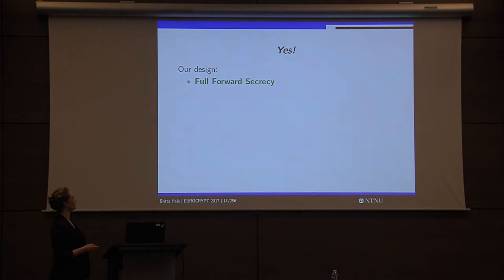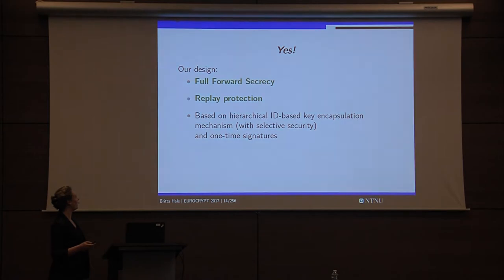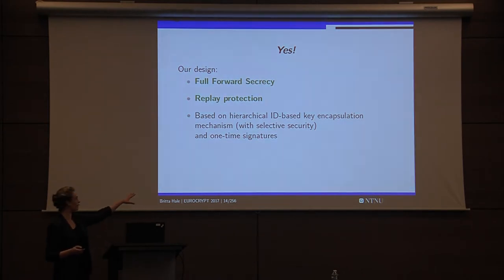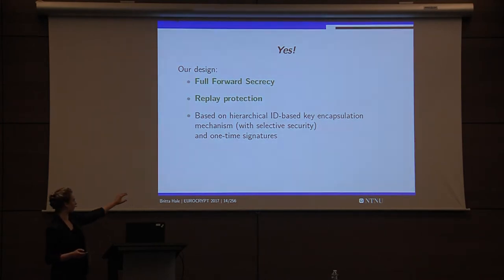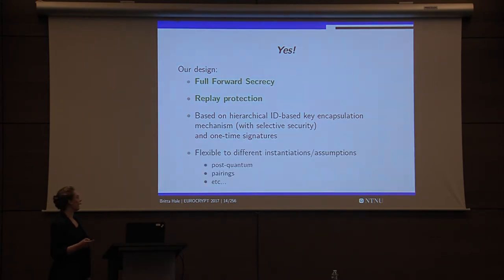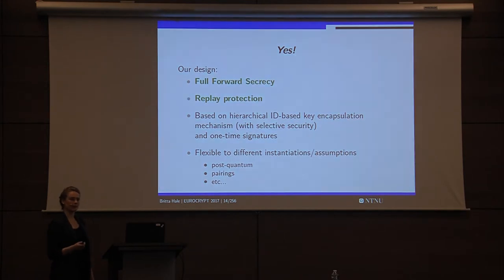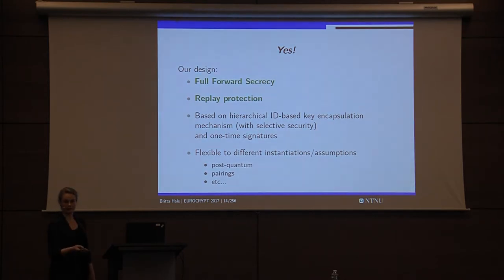Our construction: full forward secrecy — check. Replay protection — check. How we do this? It's based on hierarchical identity-based schemes with selective security, so it's not that strong of a security demand, and one-time signatures. It's also flexible — you can instantiate this with any scheme that's sufficient. For example, post-quantum, if you have a scheme that satisfies quantum or pairings, etc. It's a generic construction.